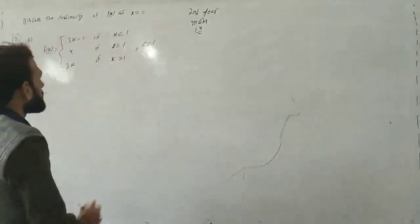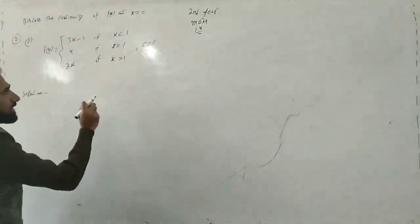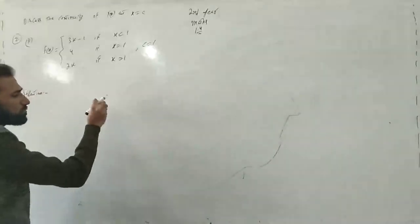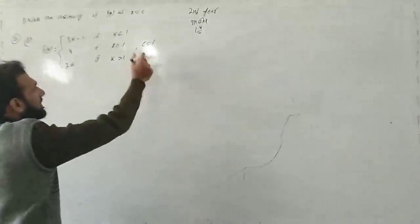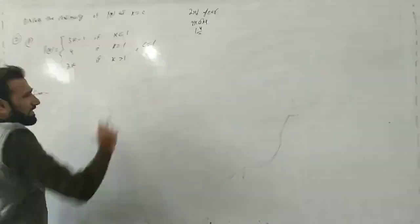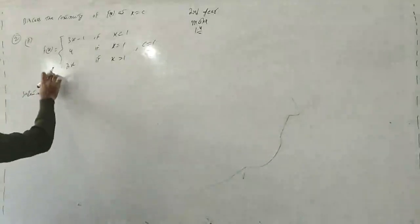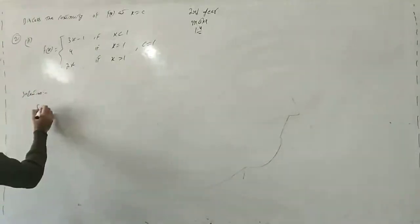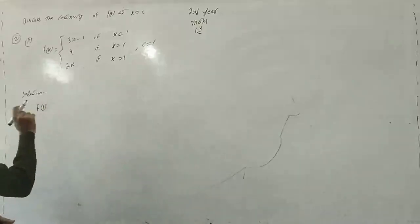Ab humne continuity check karni hai is function f of x ki. Sabse pehle pehli condition: function define hona chahiye. Humne function ki continuity check karni hai x is equal to c aur c is equal to 1 — yani 1 point par check karenge ke yeh function continuous hai ya nahi. 1 par function define hona chahiye.